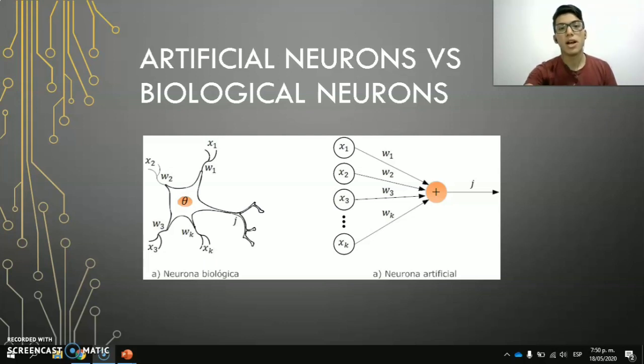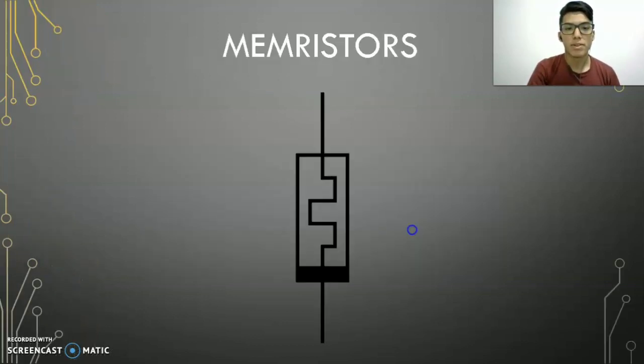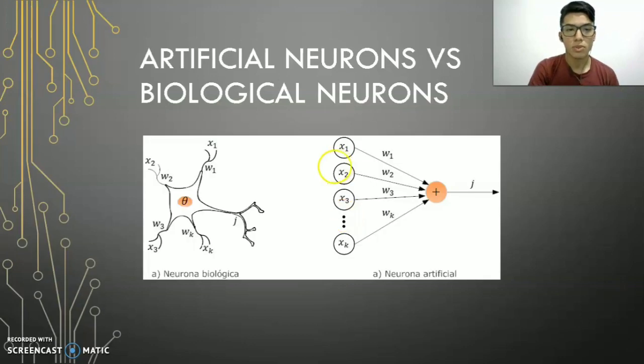In the presentation, artificial neurons versus biological neurons, this picture explains how the biological neuron is connected with an artificial neuron. On the left side, the biological neuron, right here, and on the right side, the electronical neuron, or the artificial neuron, in this case, has the parts to connect with the biological neuron.